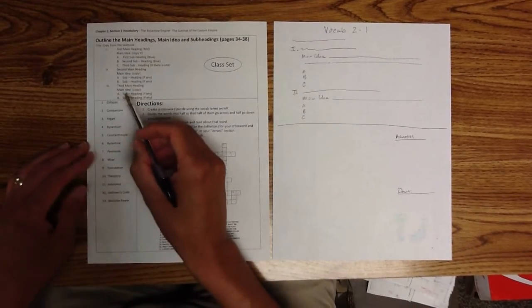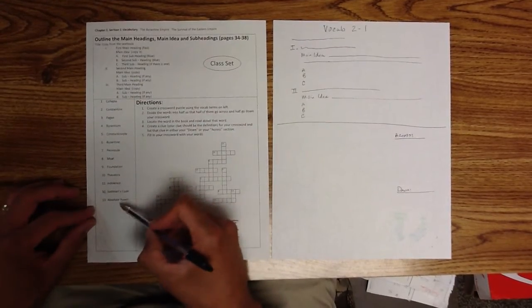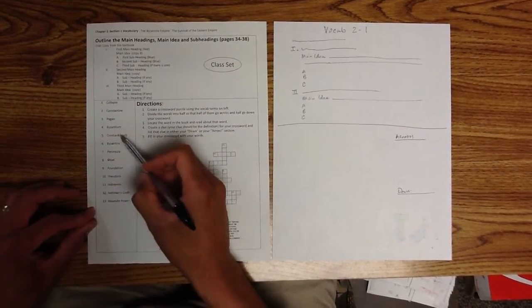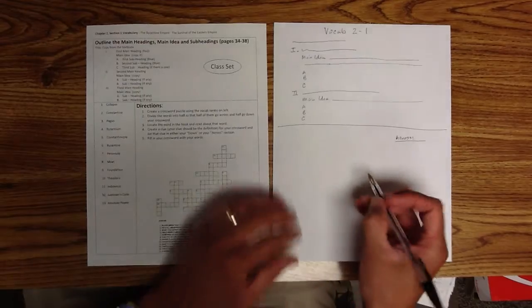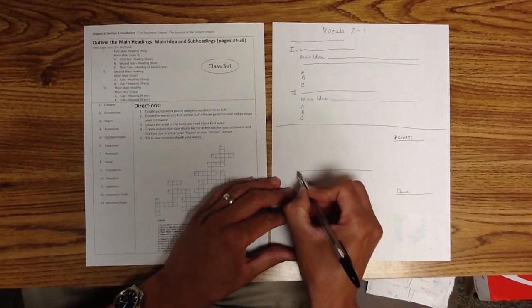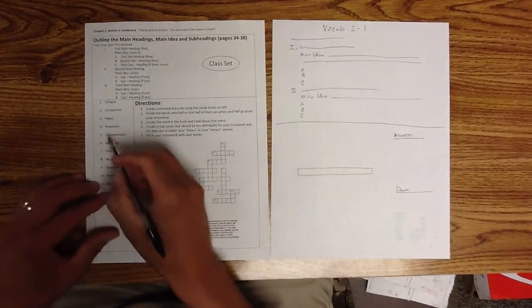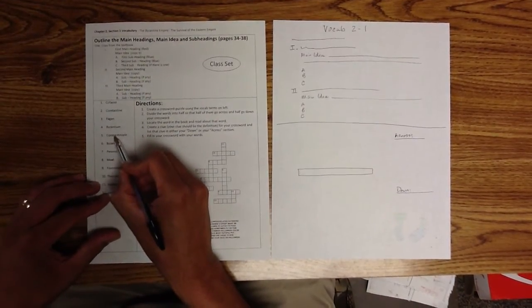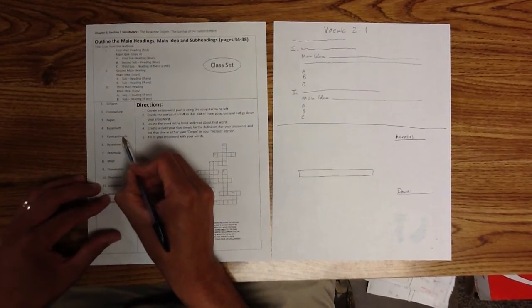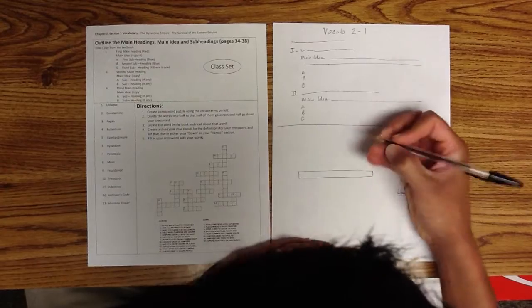So I would say what's easiest for me is always taking the largest word here first. And I look, I've got absolute power, Justinian's Code, Constantinople. So let's say Constantinople. So I'm going to draw that across my paper. And now if I count up, I need 14 letters in here.